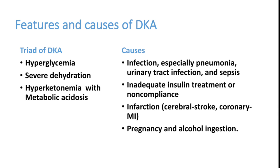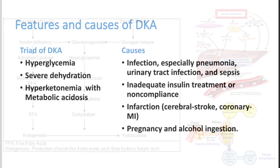The triad of DKA is high blood sugar, severe dehydration, and high ketone bodies in blood with metabolic acidosis. Causes include infections like pneumonia, urinary tract infection, and sepsis; inadequate insulin treatment or sudden stoppage of insulin therapy; myocardial infarction, stroke, or pulmonary embolism; pregnancy; and alcohol ingestion. The major causes are infection or the patient having stopped insulin therapy.